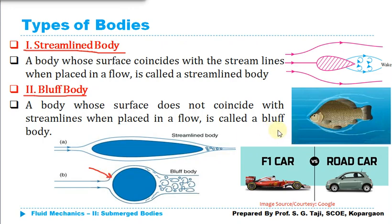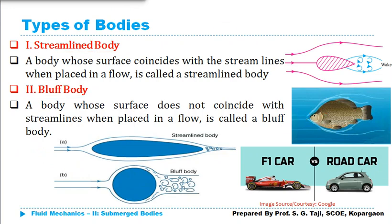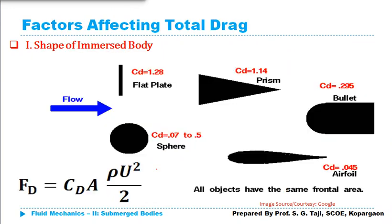We have also seen examples of streamlined bodies — one example is a fish, and another is a plane, which was inspired by the shape of birds. If you design a body as a streamlined body, the wake formation at the downstream due to boundary layer separation would be smaller, and the drag acting on that body would also be smaller. In the case of a bluff body, the wake formation is larger, and so the drag is also larger.